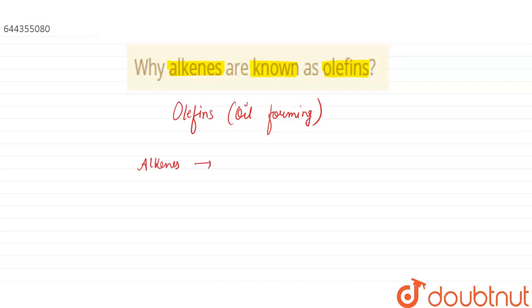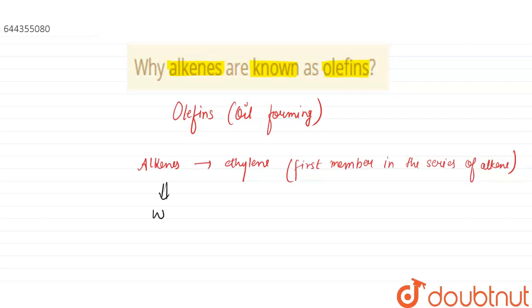Alkenes are called olefins because ethylene, which is the first member in the series of alkenes, was found to yield oily products when made to react with chlorine and bromine.